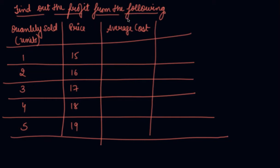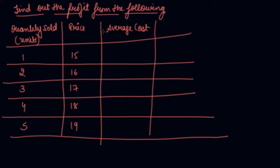In this video we have to find out the profit from the following. This is a question from your producer's equilibrium chapter and average cost is also given to you. Your quantity sold is given, price is given, and average cost is given.